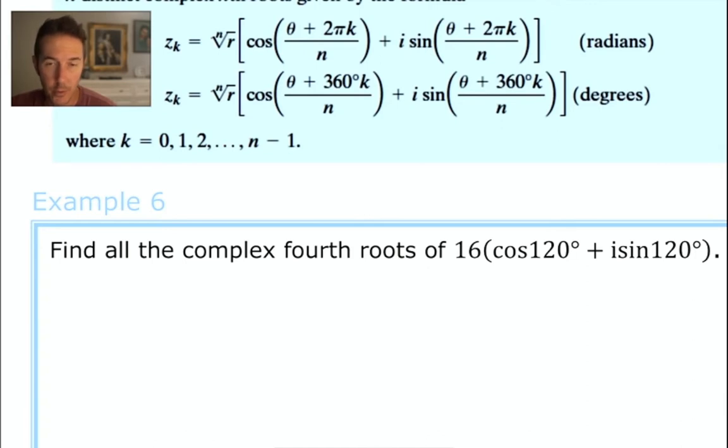Our w value, or our initial complex number, is 16 cosine 120 degrees plus i sine 120 degrees, and we're going to find all of the complex fourth roots. How many fourth roots will there be? There will be four of them. So let's give this a shot.